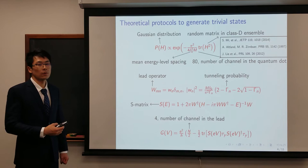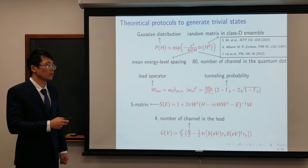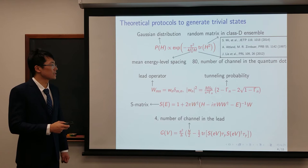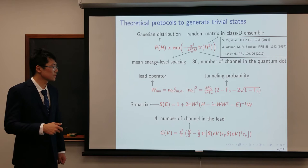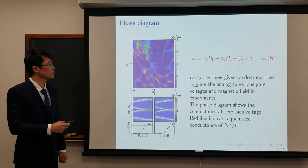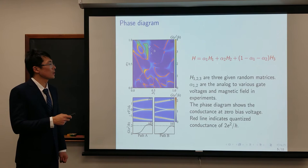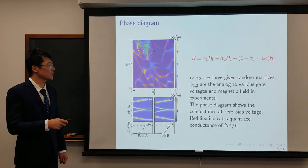For simplicity, we can always make W diagonal by choosing appropriate basis, and then each element will be controlled by the tunneling probability gamma_n, which varies from 0 to 1. Then we can calculate the S matrix and the corresponding conductance using these two equations. To obtain the controllability of the gate voltage, we introduce the multi-parameter space alpha to parameterize the final Hamiltonian. Here we have two alphas, alpha1 and alpha2, and three given random matrices H1 to H3. Alpha1 and alpha2 vary from 0 to 1, and they are analog to various gate voltages and magnetic fields in an experiment.